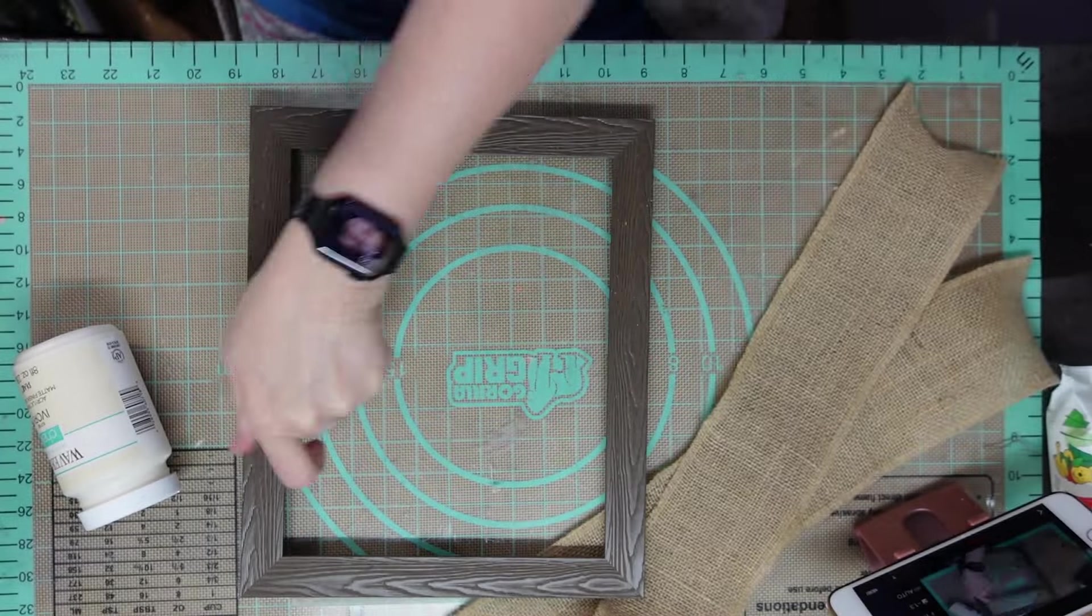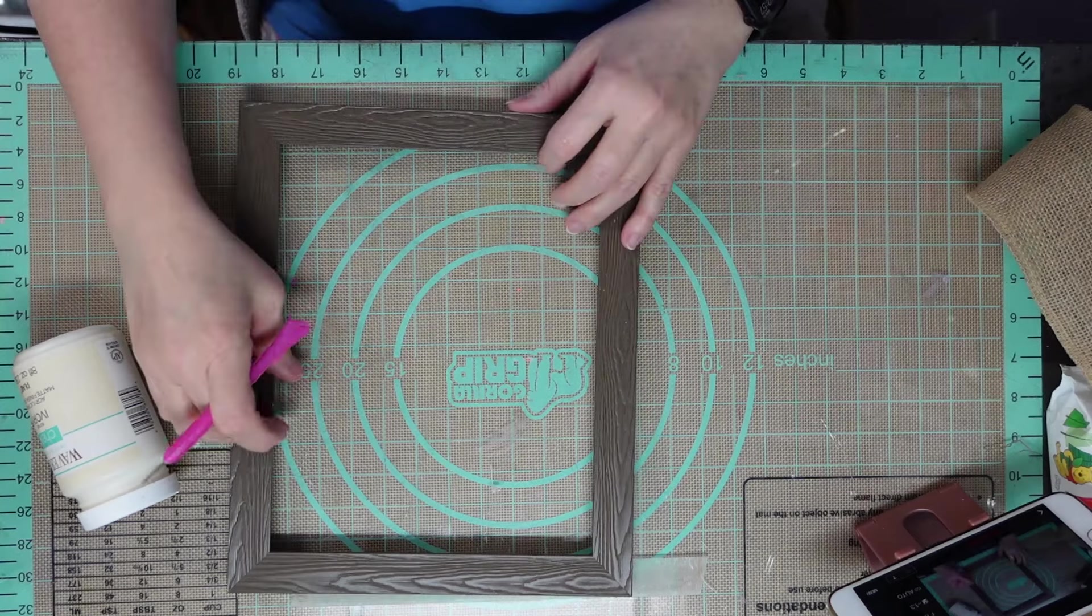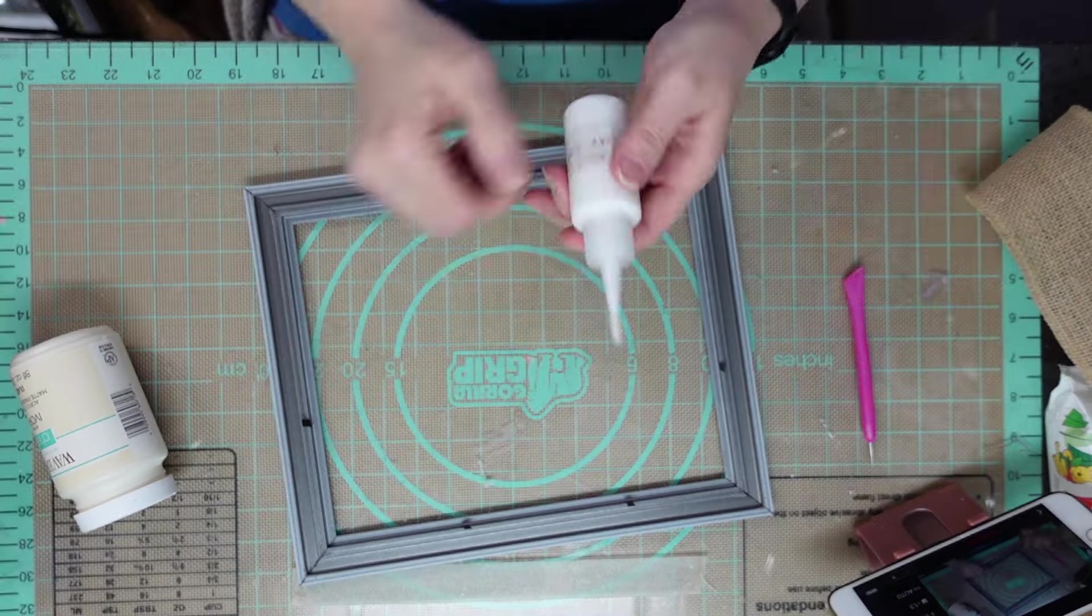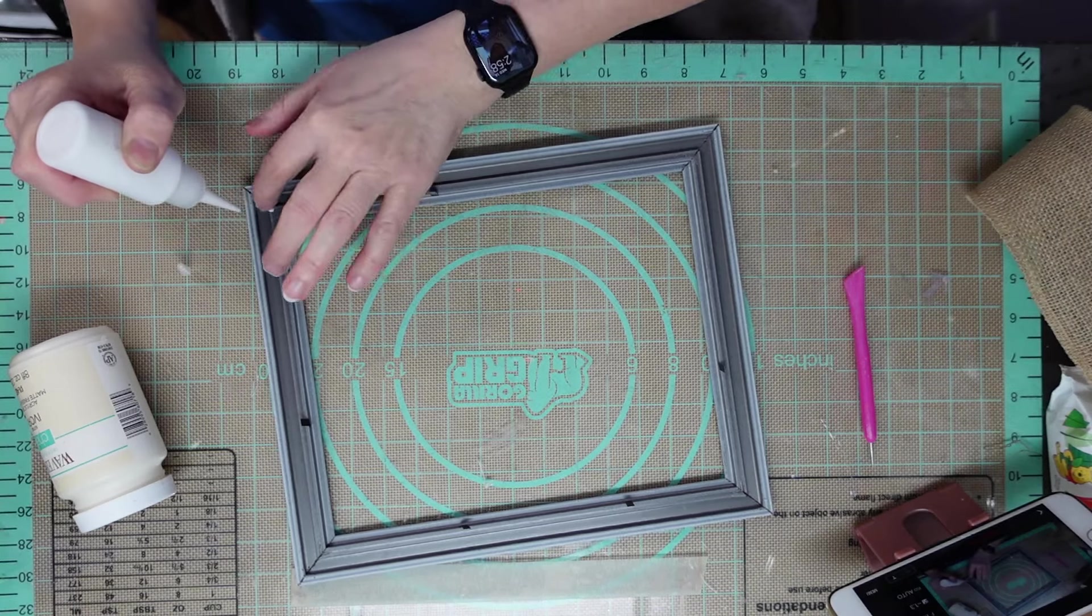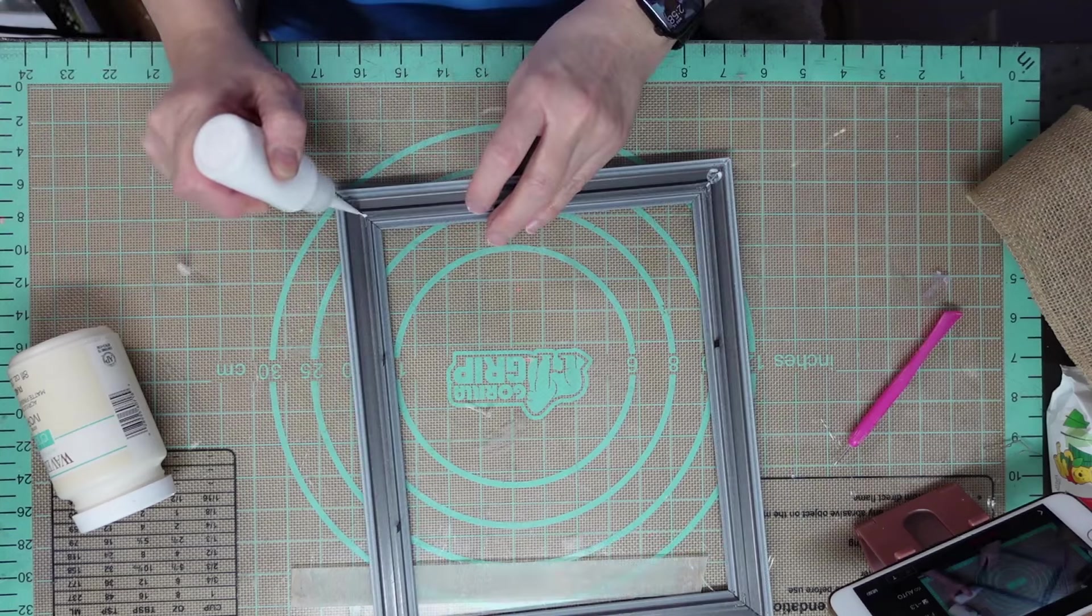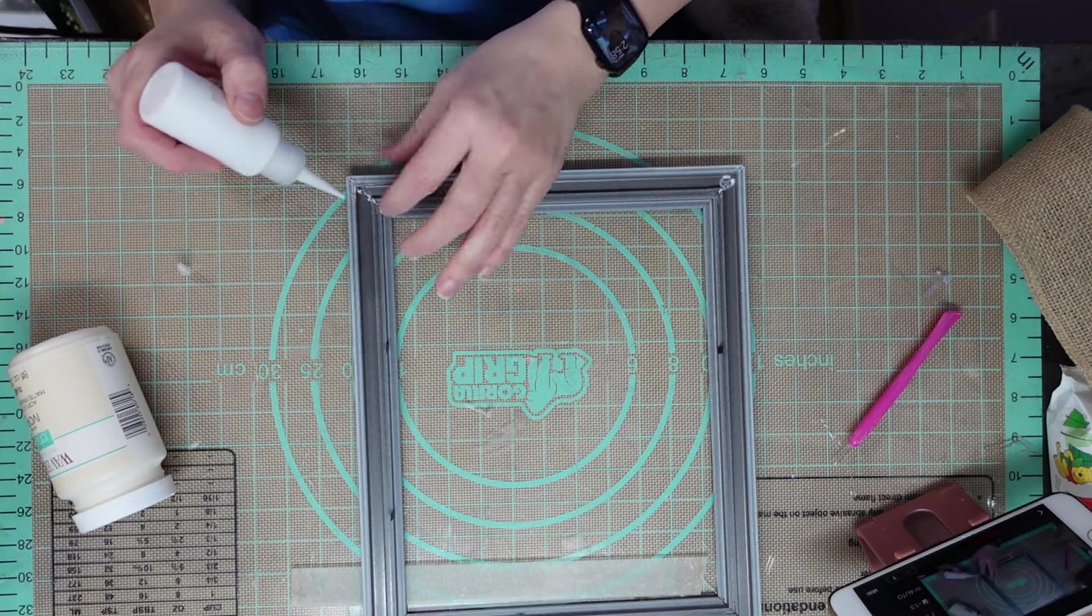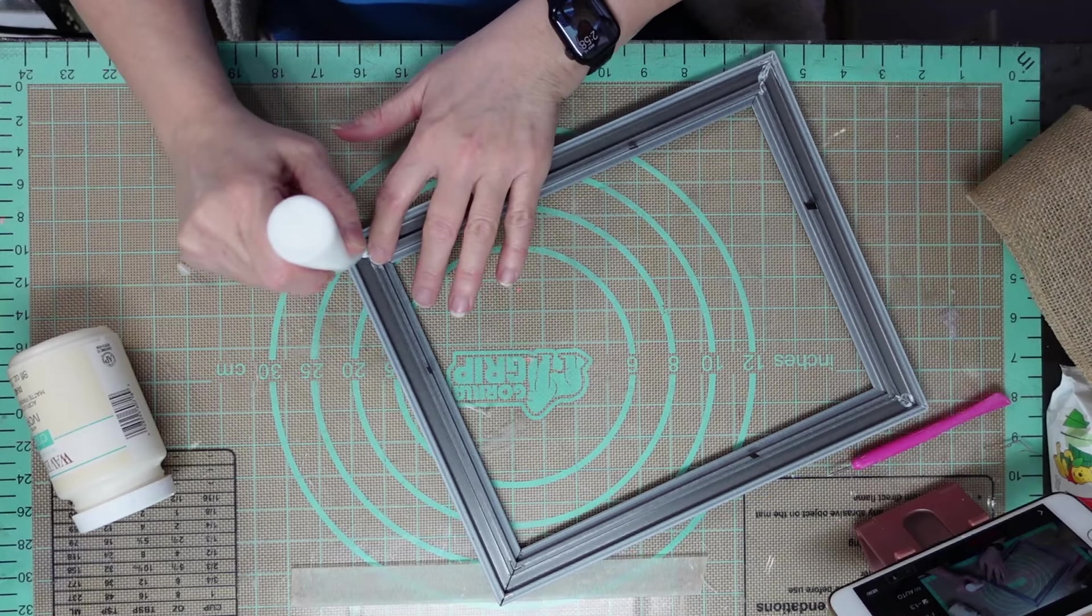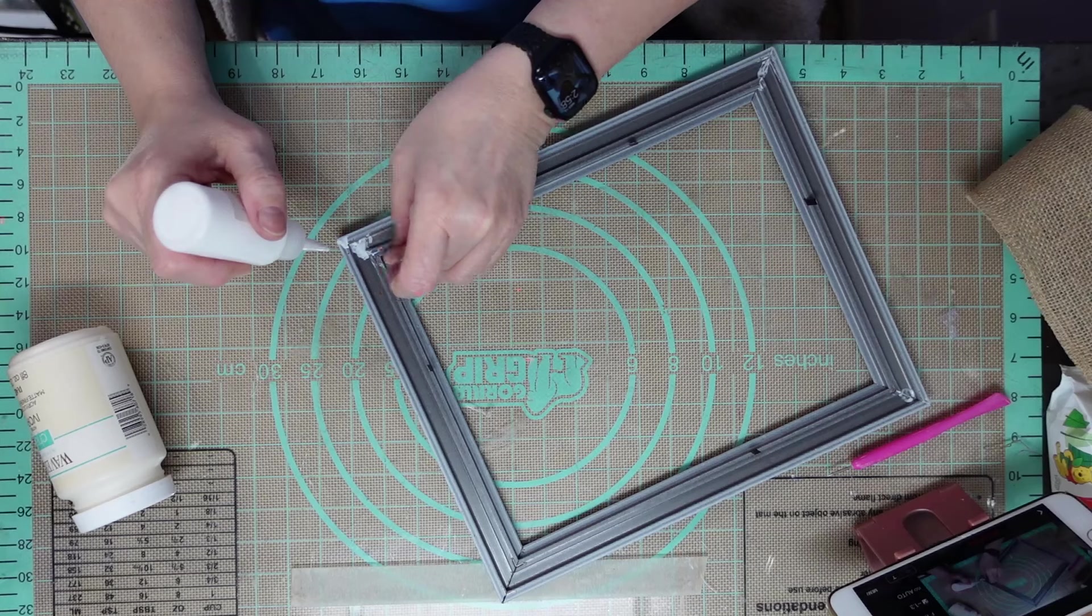I'm taking some Titebond Quick and Thick and I'm just taking my little finger and I'm going to push that glue down in those cracks because they're pretty wide cracks and these Dollar Tree frames are flimsy. They're good to use in DIYs but you have to doctor them up a little bit.